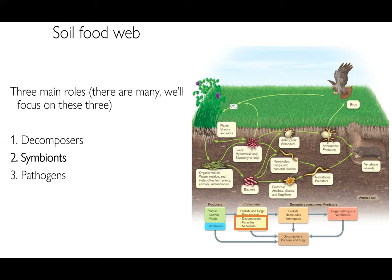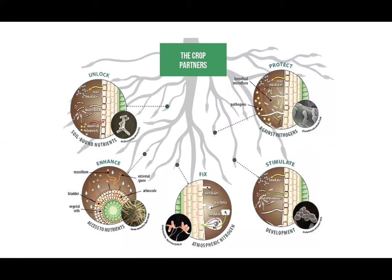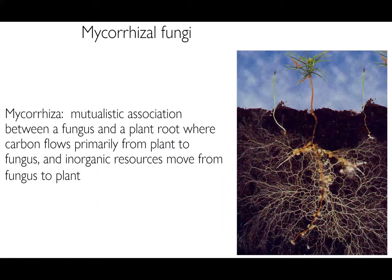Moving on to symbionts in the soil food web — in particular, thinking about plant-associated symbionts. Plants have a very active and important group of microorganisms living on, in, and directly associated with their roots. These microbes help plants by increasing nutrient acquisition from the surrounding soil, enhancing growth, providing access to atmospheric nitrogen as a free source of fertilizer, stimulating the growth of plant roots, and acting as a first line of the plant's immune system.